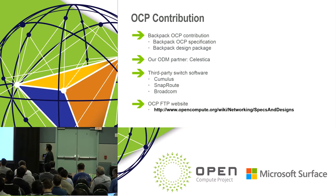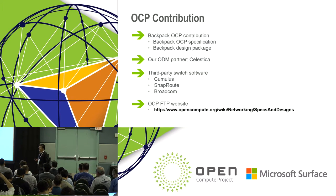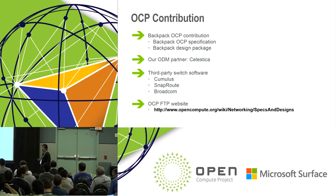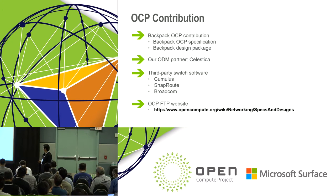OCP contributions: we have already contributed our design to OCP. We will have OCP specifications and full design packages. The mechanical design is still 2D because we are doing the final hard tooling right now; after we finish the design we will contribute the full package to OCP. Our ODM partner is Celestica — within a few months you can order this chassis directly from Celestica. We also have third-party software partners like Cumulus and Snaproute from Broadcom. The OCP FTP website is shown on this slide and you can download the spec from there.